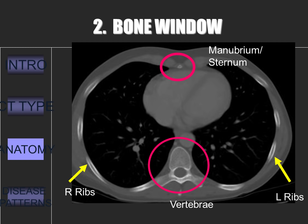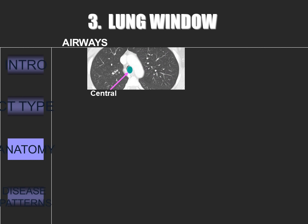Once you are done looking at the soft tissues, change to the bone window. In this view, the bony structures are emphasized. Scroll down and watch the vertebrae — look for fractures, lytic lesions, sclerosis. Next, scroll up and watch the sternum and the manubrium. Then scroll down looking at the right ribs, and then scroll up and look at the left ribs. You'll see fractures and lytic lesions, sclerosis, and other things if you follow this approach every time.